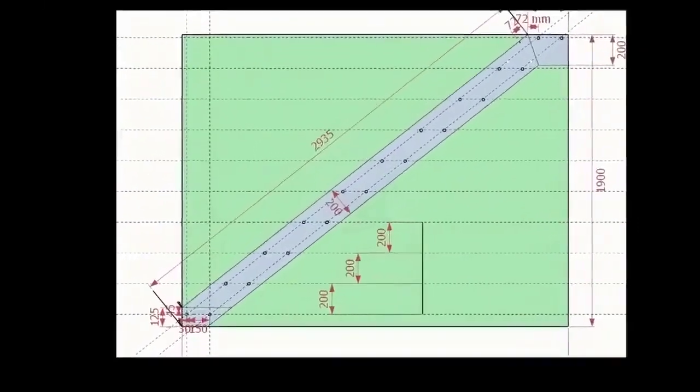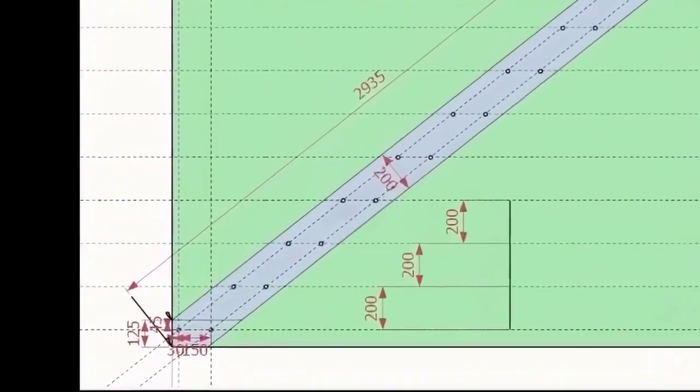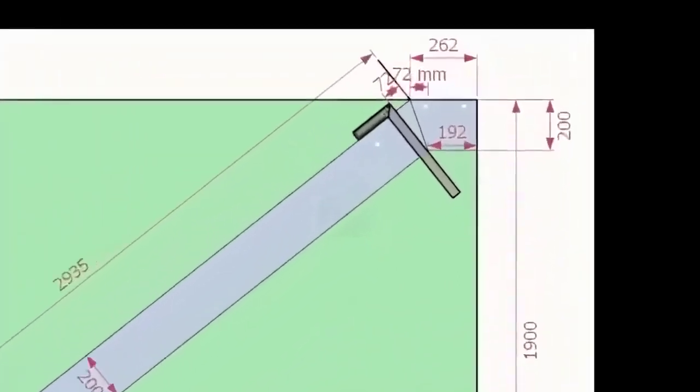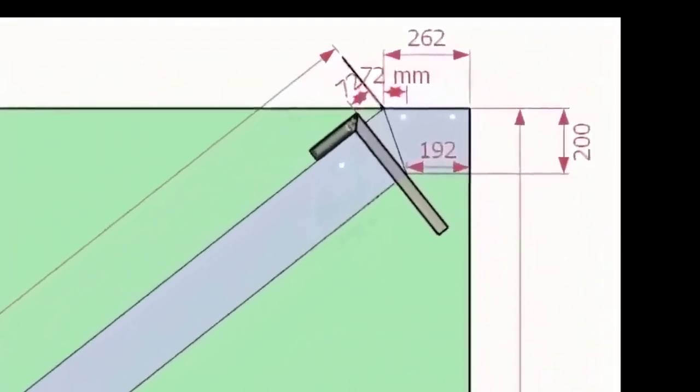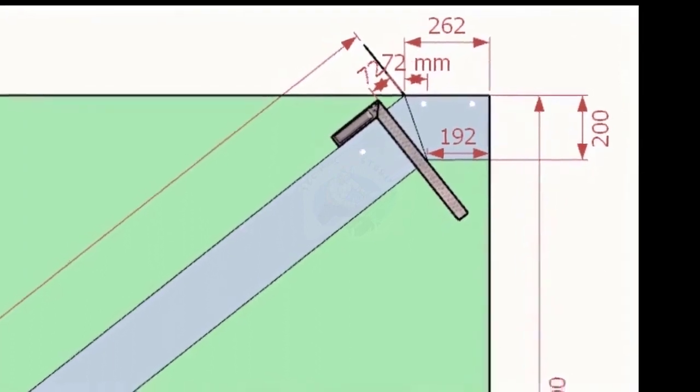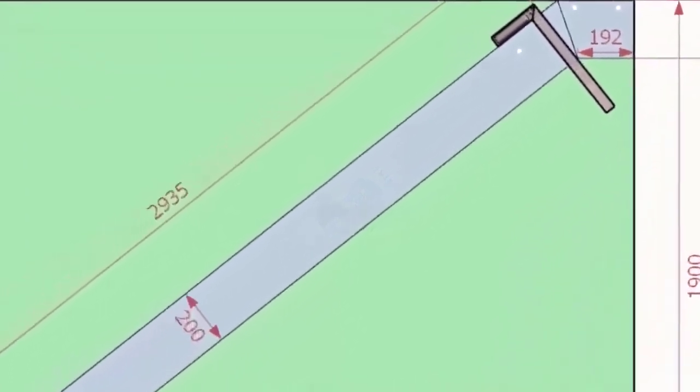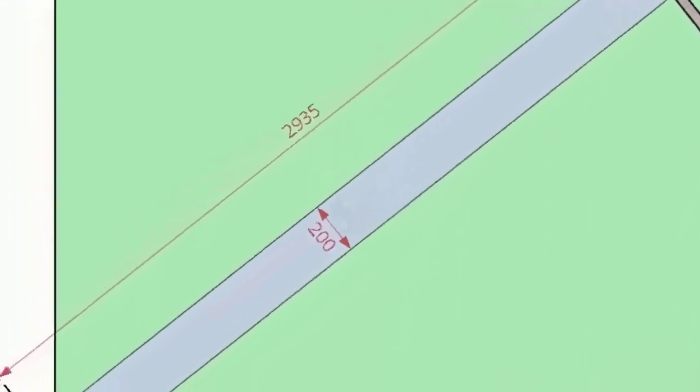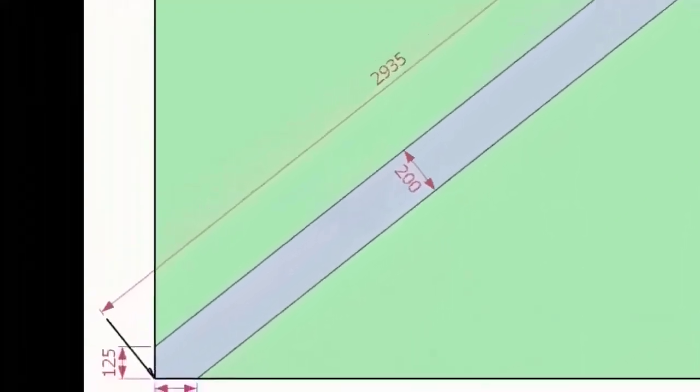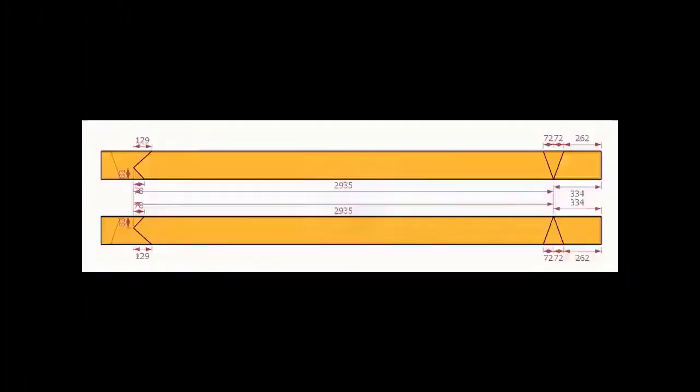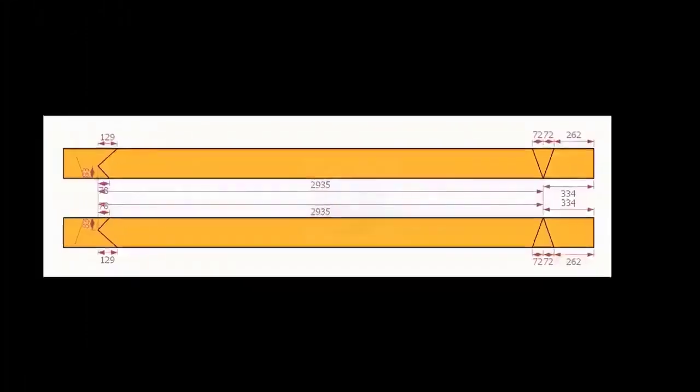Each intersection point is a bolt hole center. Let us mark the channel now. Note down the actual measurements in a notebook. Mark one set as it is and one set as opposite.